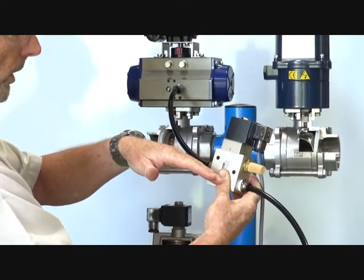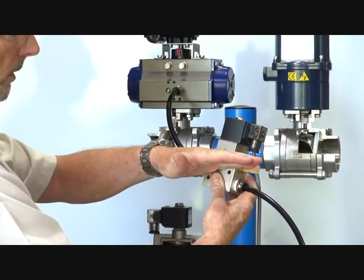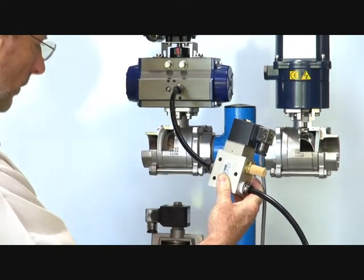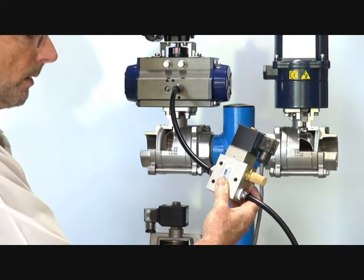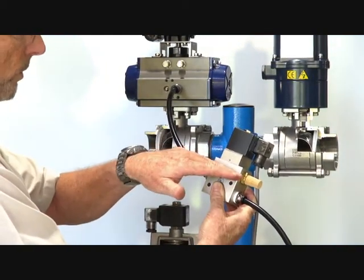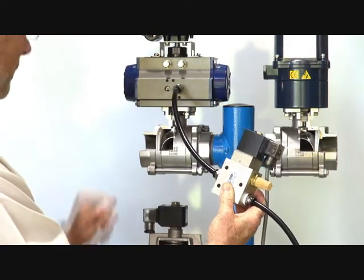In the 3.2 normally closed position, air is blocked and the outlet exhaust and cylinder port are connected. When the unit is operated, the exhaust port is blocked off and the inlet and supply port are actuated to the operator.